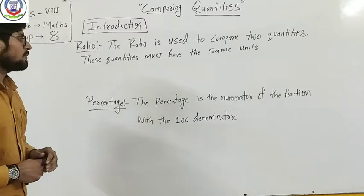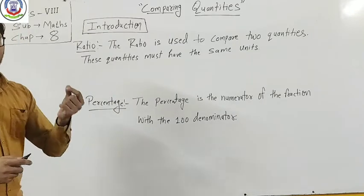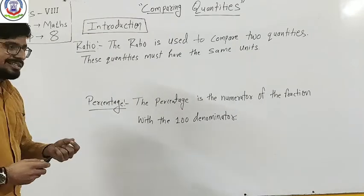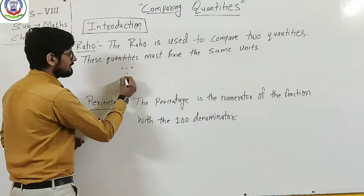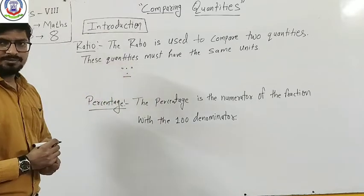This is what you learned in Class 7. Now let me talk about the symbol for ratio. Ratio is represented by this symbol, that is, colon.